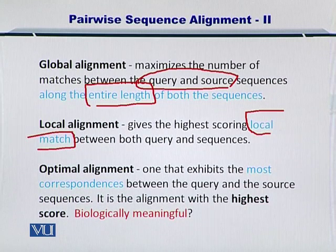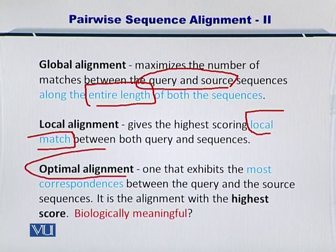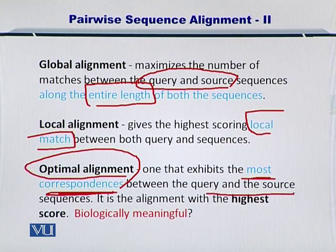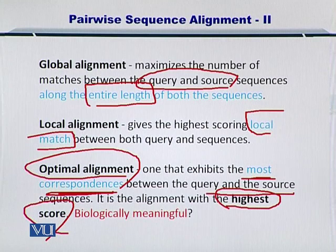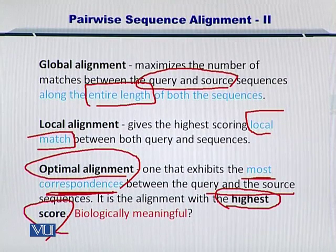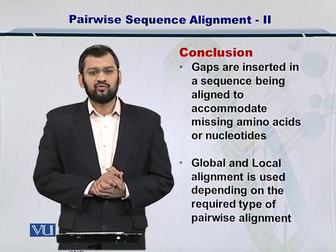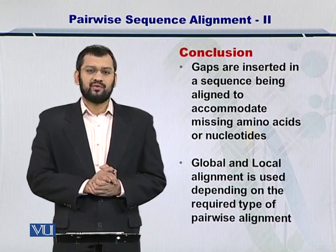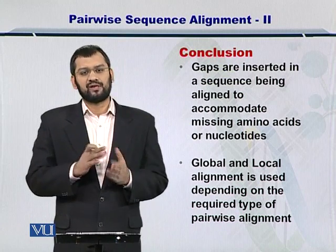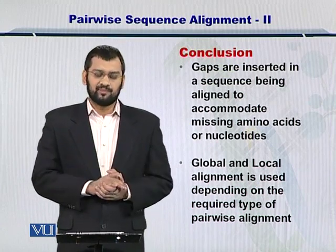There is a third category of sequence alignment, which is not a formal category, and that is the optimal alignment. This kind of alignment exhibits the most correspondence between the query and the source — it is the alignment with the highest score. We will discuss how to score these alignments later. Important to note is that such a highest-scoring alignment may not be biologically meaningful.